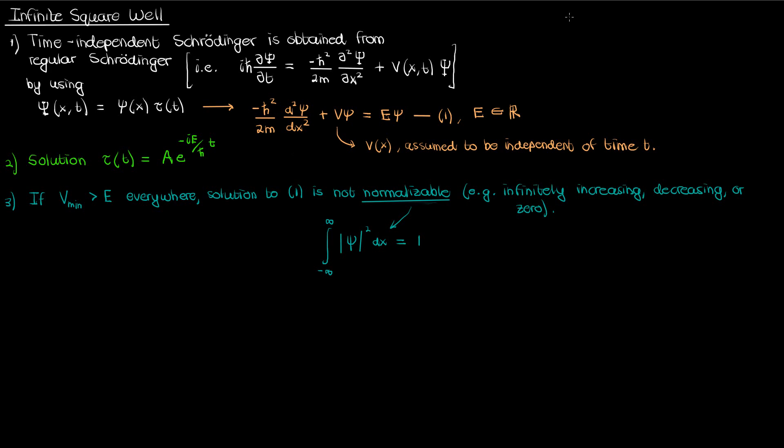Now although I was able to solve for the tau part of the wave function psi, I can't solve for the small psi part unless I obtain the solution of the time-independent Schrödinger equation. And what's stopping me from doing that? Well it's the value of the potential energy function. Once I specify the potential energy I will then be able to solve equation 1 and then obtain the solution psi to the regular Schrödinger equation.